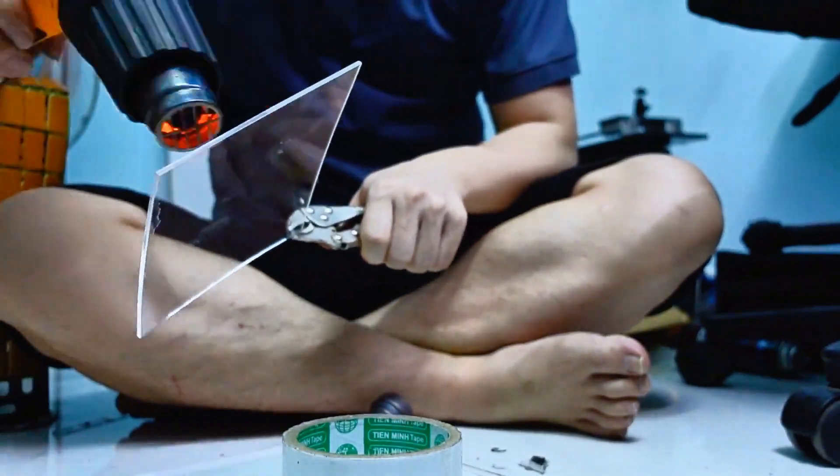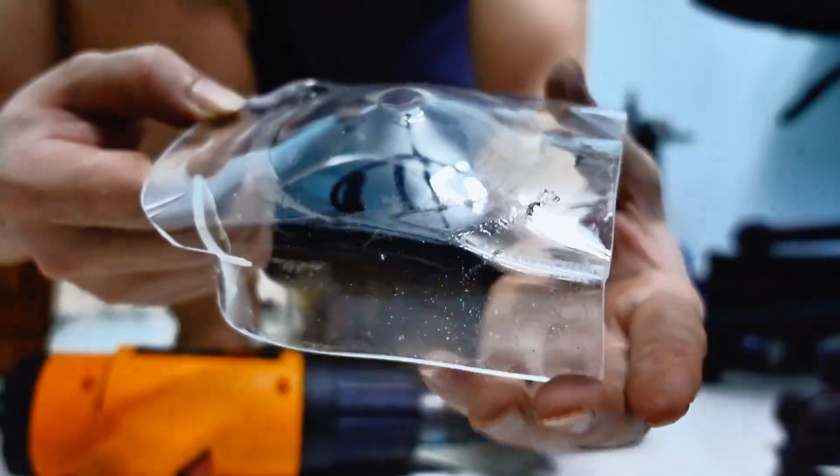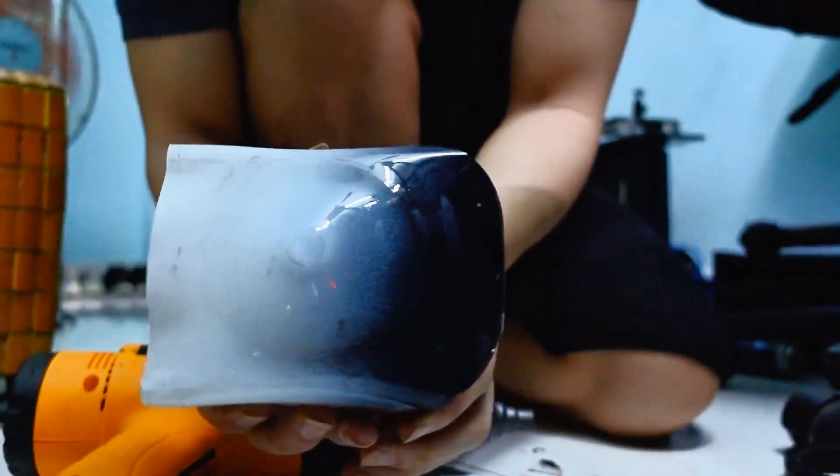Next, I'll make a motor protection cover using clear mica. I'll use a high-temperature heat gun to soften the mica sheet and shape it into a sturdy and visually appealing motor guard.